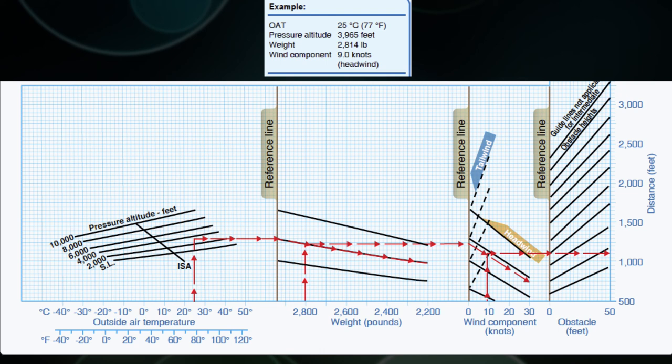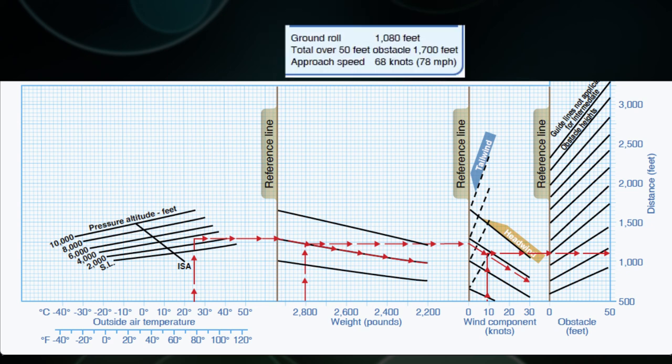And our weight is now 2,800 pounds. So we follow the slant of the line to 2,800, and then go right across all the way to the next reference line. Our headwind is 9 knots, so we'll follow the downsloping line until 9 knots, and then go right across to the next line. Our ground roll for the landing distance happens to be right about 1,000 feet, 1,100 or so. And if we follow the slope line up, it's going to be about 1,700 feet for a 50-foot obstacle clearance.